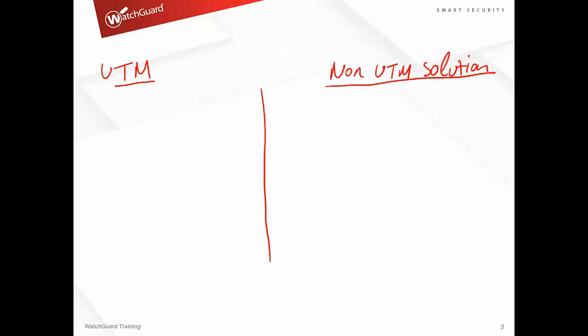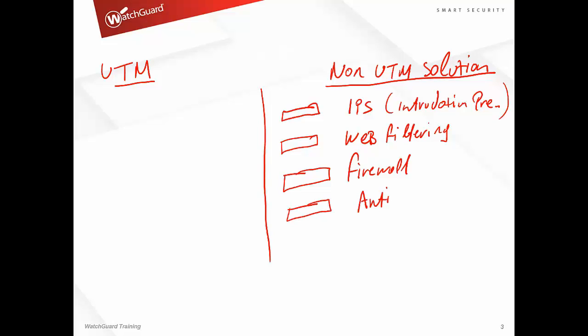What does it mean? It means that we need one device that is going to be doing the IPS. It's like intrusion prevention. Then we need another device to do the web filtering. Then we need another one device to do firewall. Then we need another one device to do antivirus. And most probably, we will need another one device for log and monitoring.